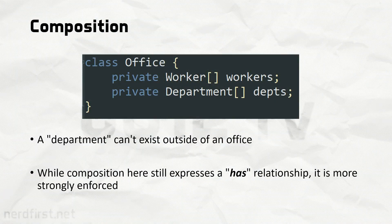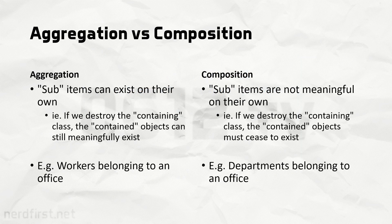Conversely, we can also talk about composition. Composition is slightly different. Going back to the office example, let's add in the concept of departments. We can of course section up an office into various departments. However, what sets this apart from the workers is, when an office closes down, the departments cease to exist. Departments don't make sense outside the concept of offices. So hopefully you can see the difference between composition and aggregation — even though both involve big objects containing smaller objects, the semantics and actual meaning are different.